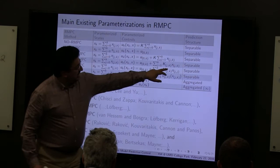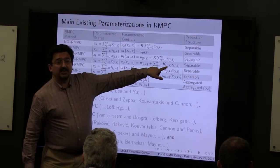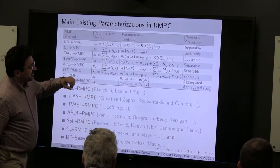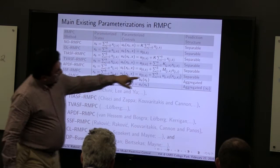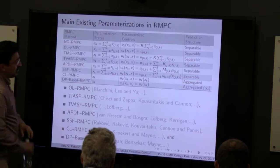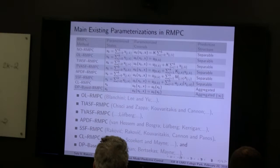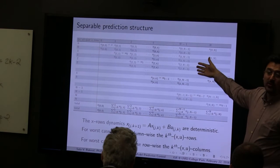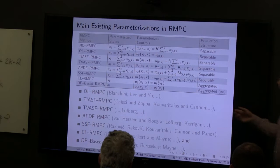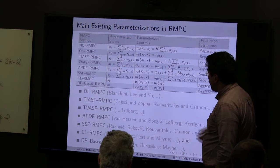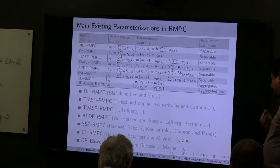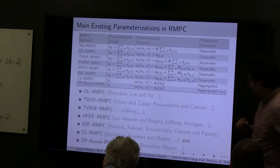These matrices K, if optimized online, give rise to non-convexity because they multiply the predictions. However, you can reparameterize in terms of M_{jk} variables and obtain a convex parameterization. And if you look at the full structure without imposing any restrictions, the structure allows for full nonlinear separability. In the end you can do a fully separable scheme. When you go back to the closed-loop and scenario-based approaches, they are not necessarily separable, but it's unclear whether this has been fully established.